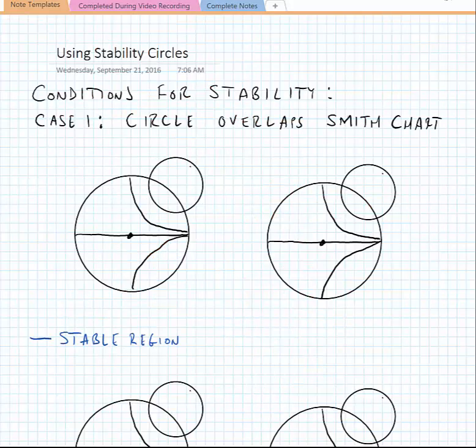Let's first examine our condition for stability, and that is what we'll call case one. This is where our stability circle overlaps with the Smith chart. In other words, the combination of the radius from the center of the Smith chart and the radius of the circle causes the stability circle to overlap somewhat with the Smith chart.